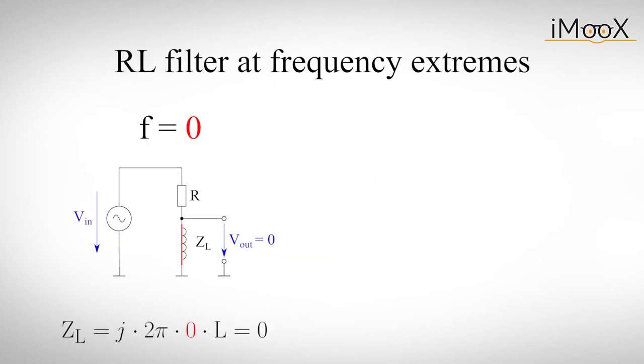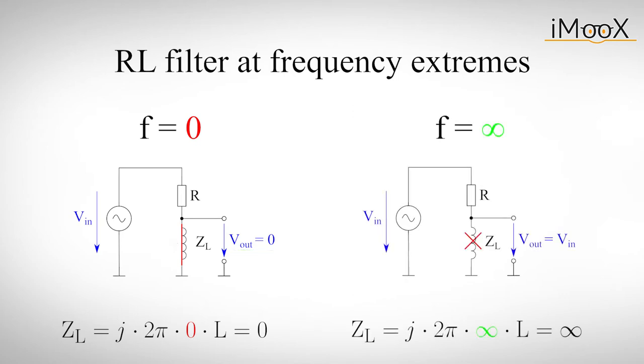For low frequencies, the inductor will behave just like the wire it is, and will short the output to ground. With higher frequencies, the inductor will gain impedance and the output voltage will rise. For very high frequencies, the inductor will behave like an open circuit. Since no current can flow, the output voltage will be equal to the input voltage.